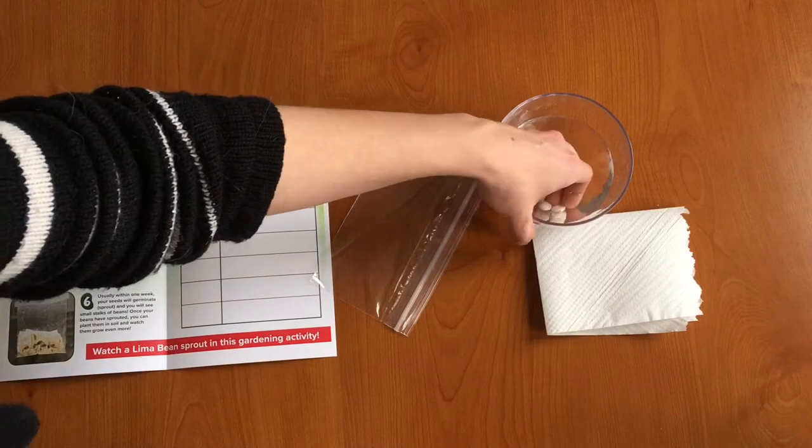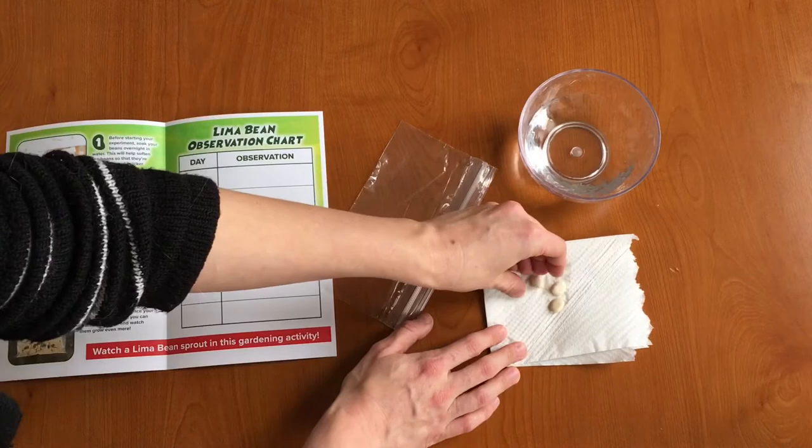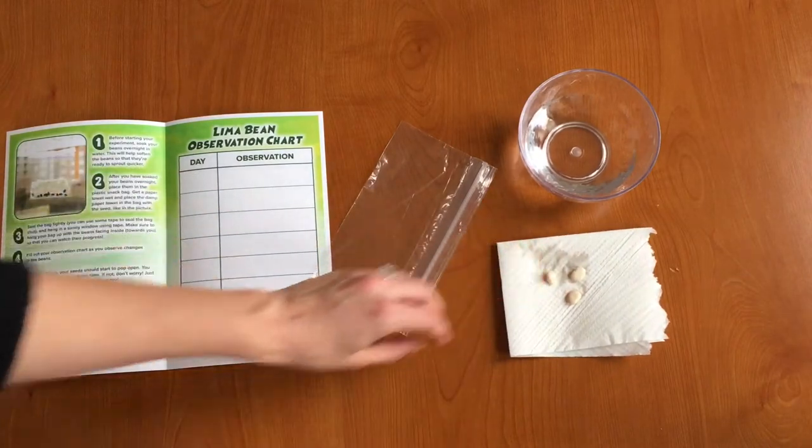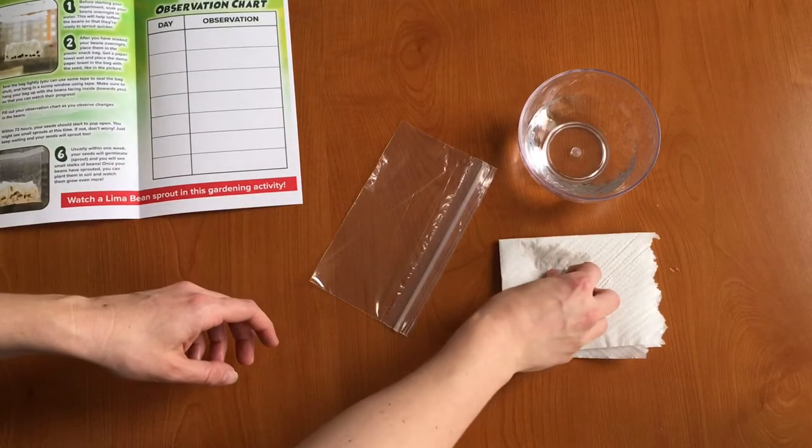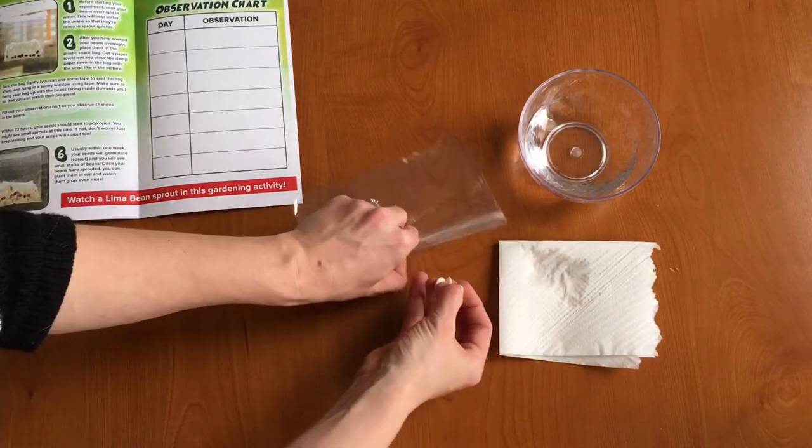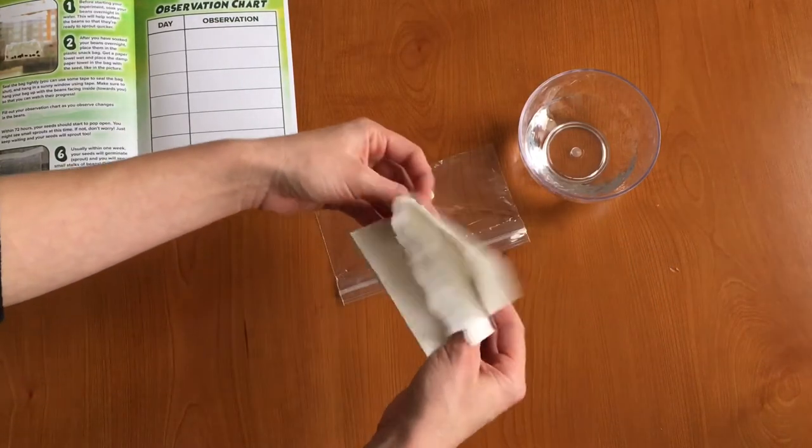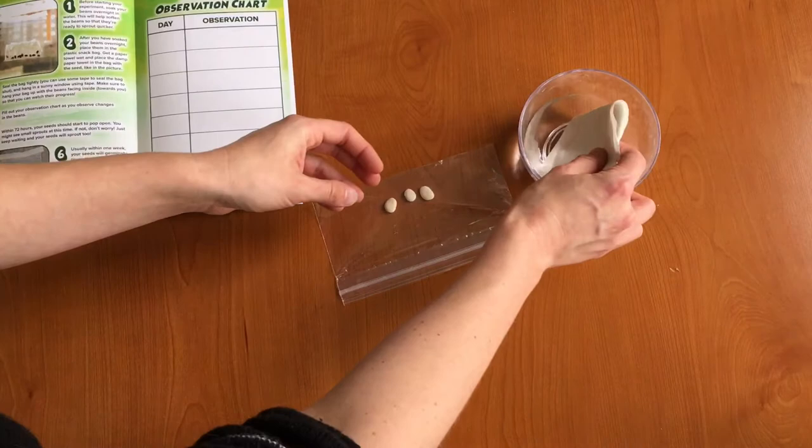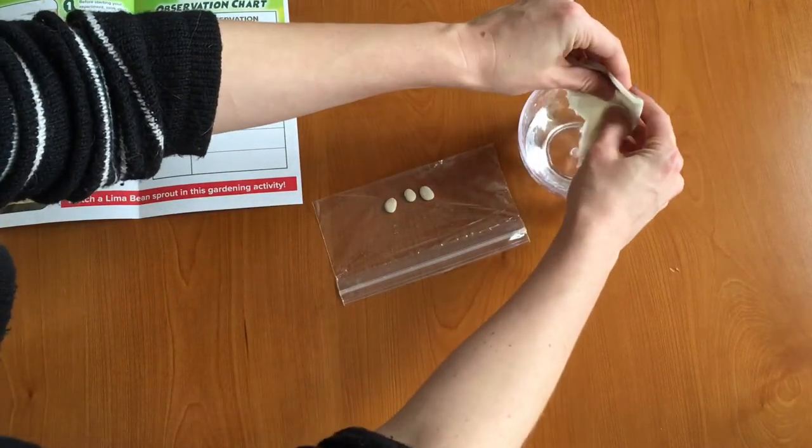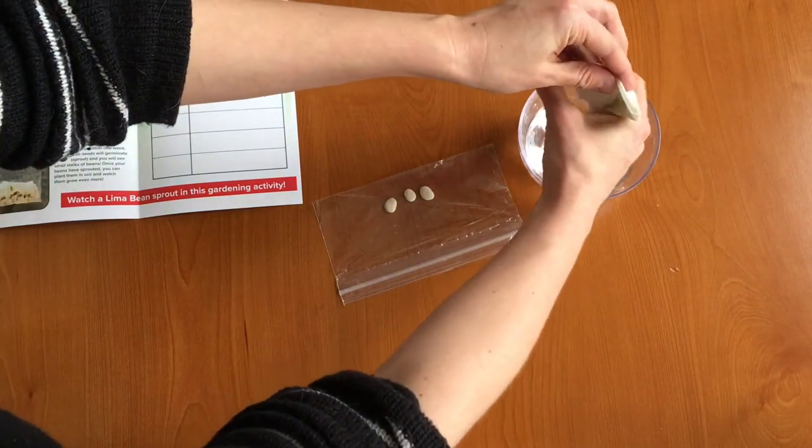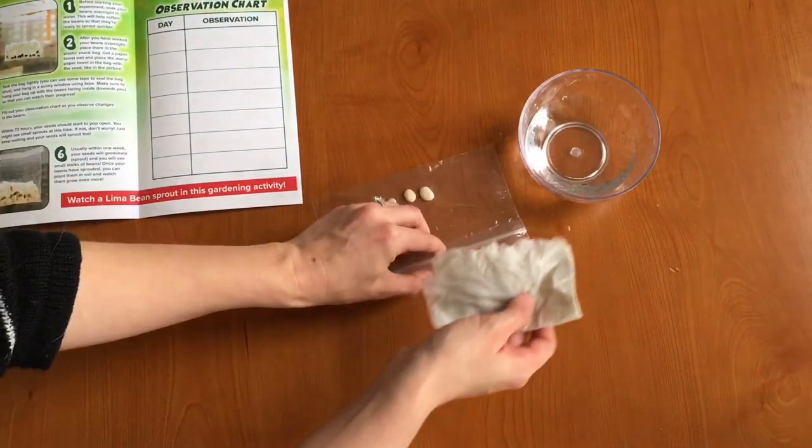So we're going to pretend that those soaked for overnight. I'm just going to put them on my paper towel right here for now and next what we want to do is we want to place our wet lima beans in the plastic bag. Now we're going to take our paper towel and we're going to soak it and get it nice and wet, and you don't want it dripping wet but just nice and damp.